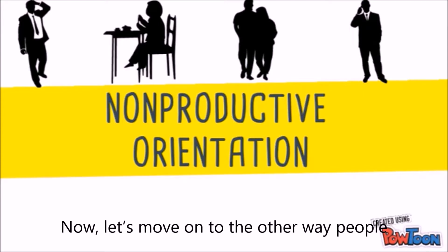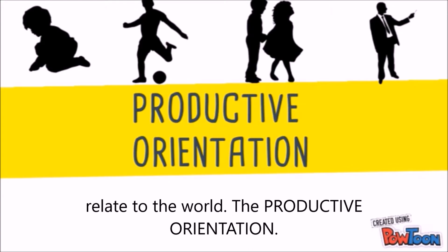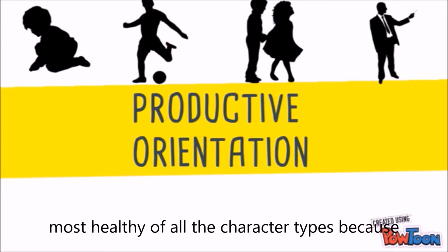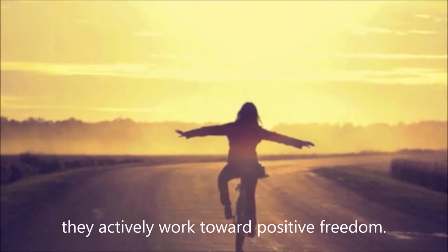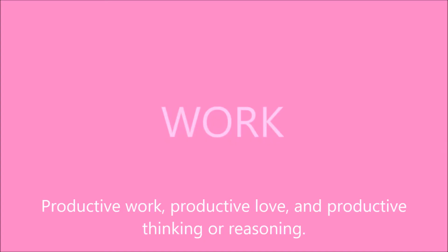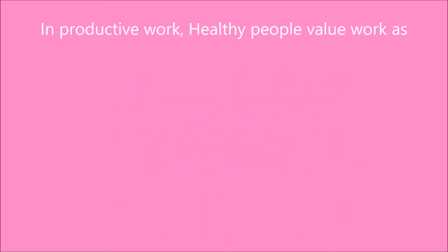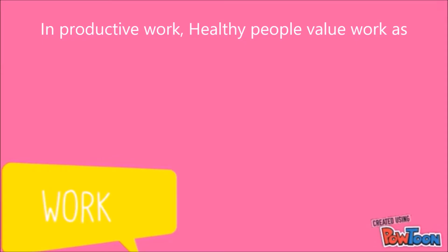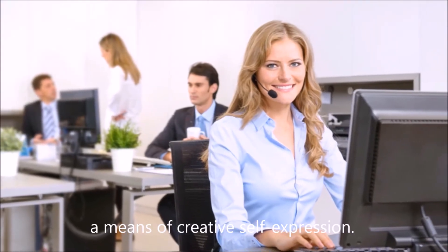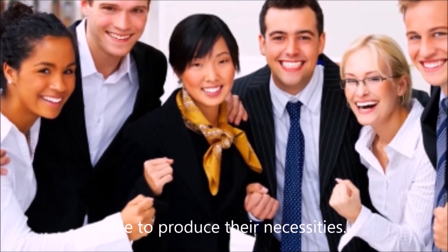Now let's move on to the other way people relate to the world: the productive orientation. The productive orientation is considered the most healthy of all the character types, simply because they actively work toward positive freedom. The productive orientation has three dimensions: productive work, productive love, and productive thinking or reasoning. In productive work, healthy people value work as a means of creative self-expression. They are not working to exploit others, but working to produce their necessities.